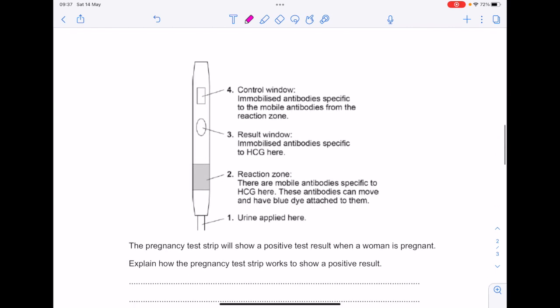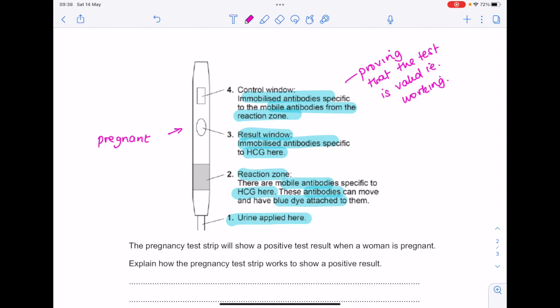Figure 2 shows the parts of a pregnancy test strip. We can see here that the urine is applied here and the urine is going to move upwards through the pregnancy test strip. Number 2 is the reaction zone. There are mobile antibodies specific to HCG here. The antibodies have a blue dye attached to them. Here's the results window with immobilized antibodies specific to HCG. Number 4 is the control window with immobilized antibodies specific to the mobile antibodies from the reaction zone. That's just proving that the pregnancy test is valid, i.e. working.